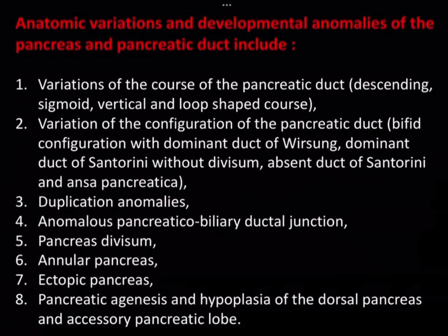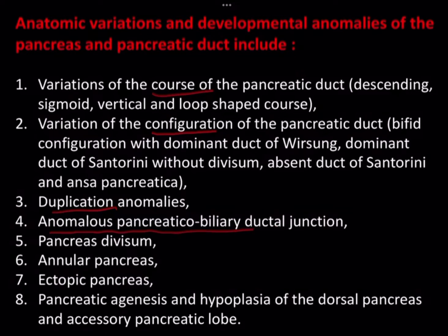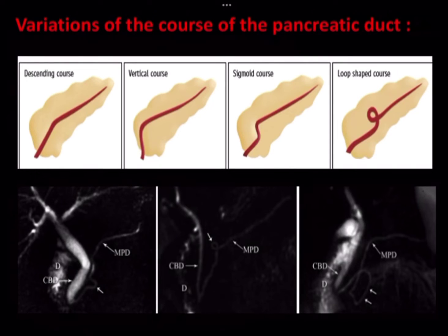Now that we know the ductal anatomy and how the pancreas develops, let's review the anatomic variations and developmental anomalies of the pancreas and pancreatic ductal system. These include: variations in the course of the pancreatic duct, variation in configuration of the pancreatic duct, duplication anomalies, anomalous pancreatic biliary ductal junction, pancreatic division, annular pancreas, ectopic pancreas, pancreatic agenesis, hyperplasia of the dorsal pancreas, and accessory pancreatic lobes.